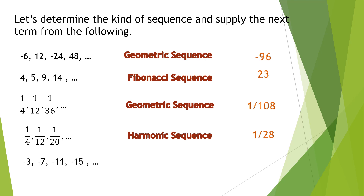Last example: negative 3, negative 7, negative 11, negative 15. Is it harmonic, geometric, or arithmetic? This is an arithmetic sequence because there is the same number being added for the progression — negative 4. Therefore, the next number after negative 15 is negative 19.